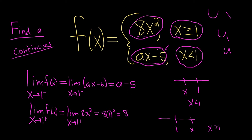So from the left, we get a minus 5. From the right, we get 8. We want the limit to exist because we want it to be continuous. We're trying to force continuity. So what we do now is we set the limits equal to each other. That means that a minus 5 must be equal to 8.